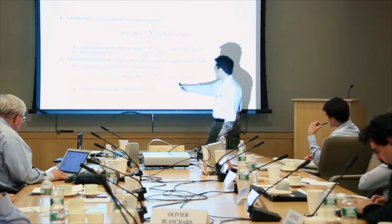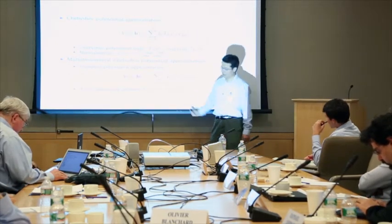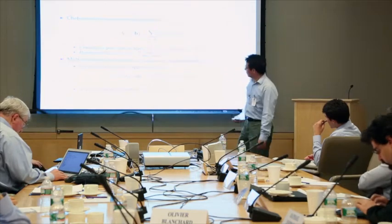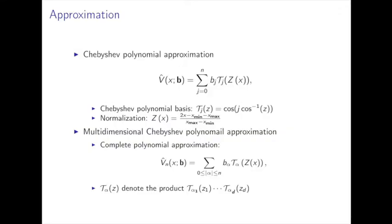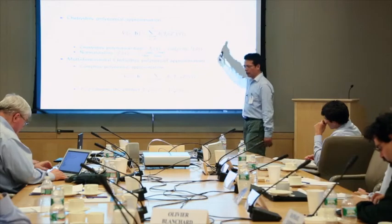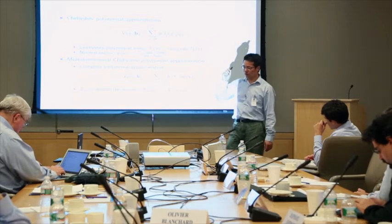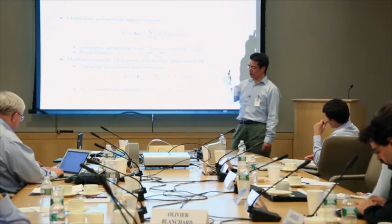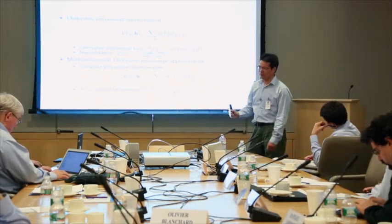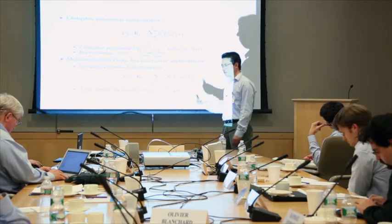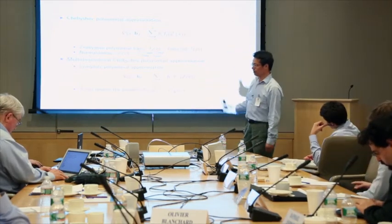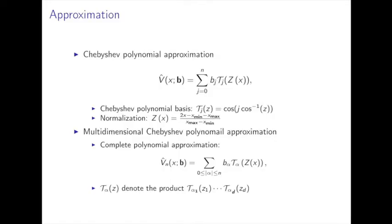The number of terms matters here. If you have dimension 10 and a tensor product of degree 4, the number of terms is 4^10. But for the complete polynomial, it's C(14,4) — 14 choose 4 — which is a much smaller number, with no curse of dimensionality.